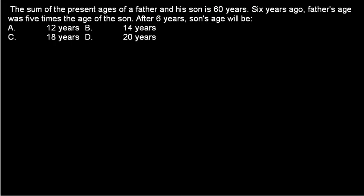Welcome again guys. Let's solve a new problem — this is also a classic type of age-related problem. The sum of the present ages of a father and his son is 60 years. Six years ago, father's age was 5 times the age of the son. After 6 years, what will the son's age be?